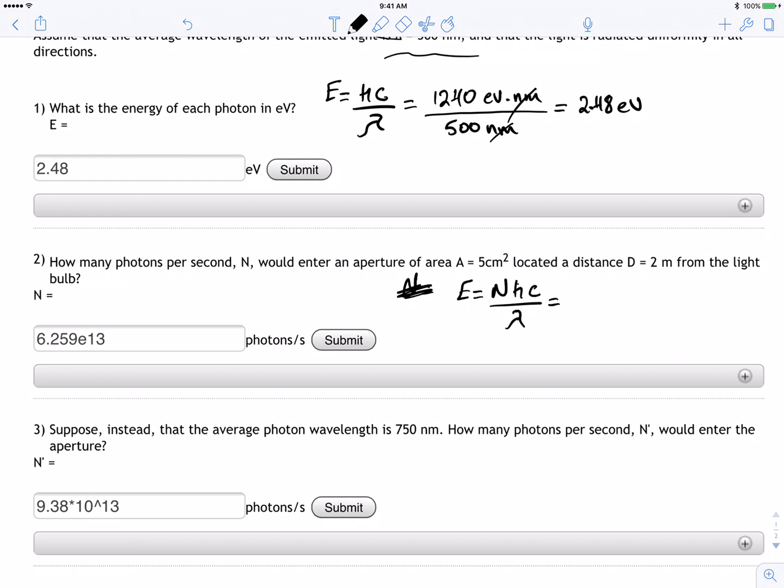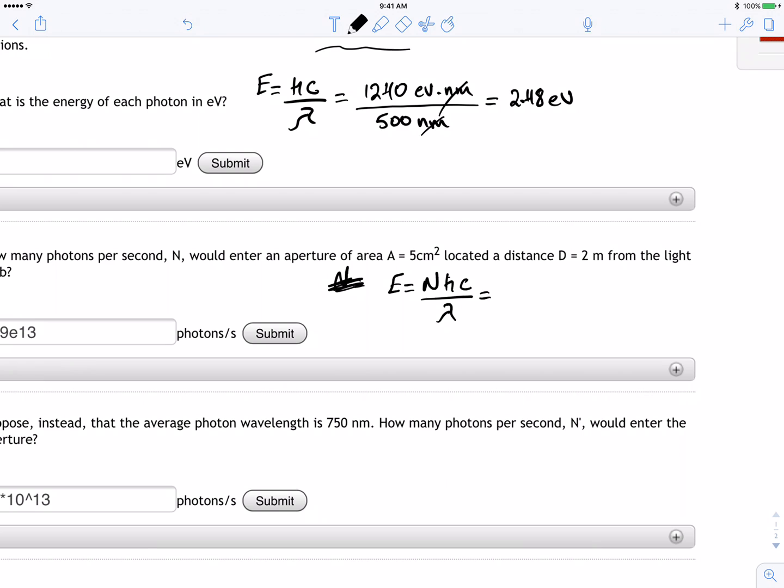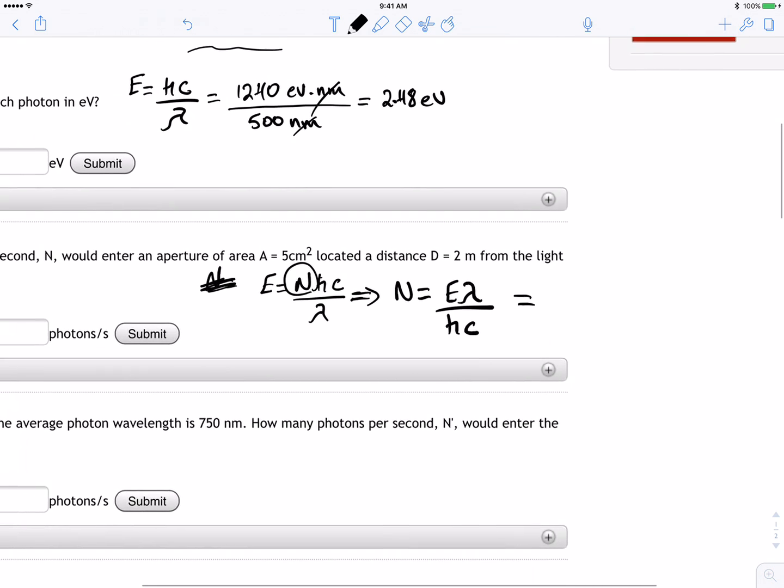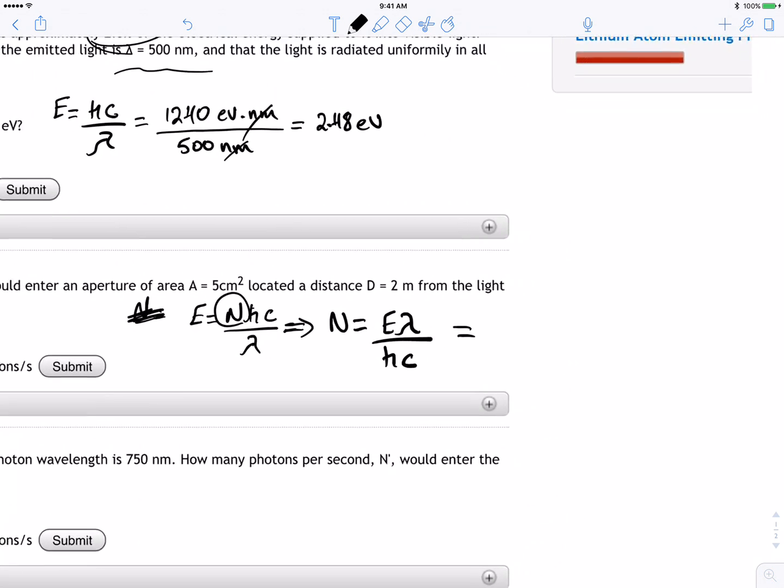So we can write this as, if we want to get the N, N will be equal to E lambda divided by hc.